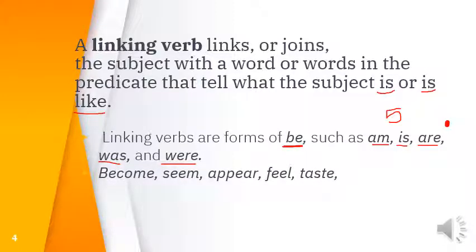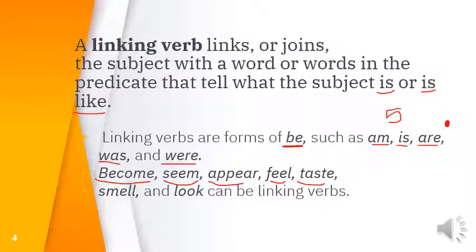There are also other linking verbs that can sometimes be used as action verbs and sometimes as linking verbs: become, seem, appear, feel, taste, smell, and look. Please memorize them — the five forms of 'to be' plus these other seven linking verbs that can function as either linking or action verbs.